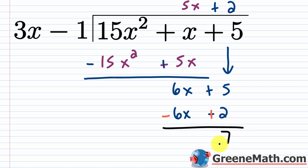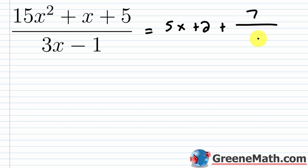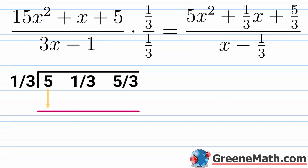So 7 is your remainder. This means the result is equal to 5x plus 2 — that's the quotient — plus 7 as the remainder, written over your divisor, which is 3x minus 1. Now let's say we wanted to do this with synthetic division.